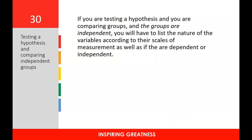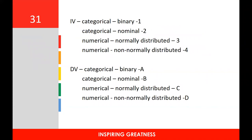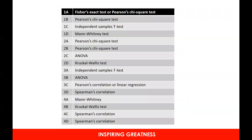If testing a hypothesis and comparing independent groups, list the nature of your variables according to scales of measurement and whether they are dependent or independent. Categorize independent variables as: one — categorical binary; two — categorical nominal; three — numerical normally distributed; four — numerical non-normally distributed. Assign your dependent variable a letter: A — categorical binary; B — nominal; C — numerical normal; D — numerical non-normal. Combining these gives you designations from 1A through 4D, and each combination points to the appropriate statistical test.